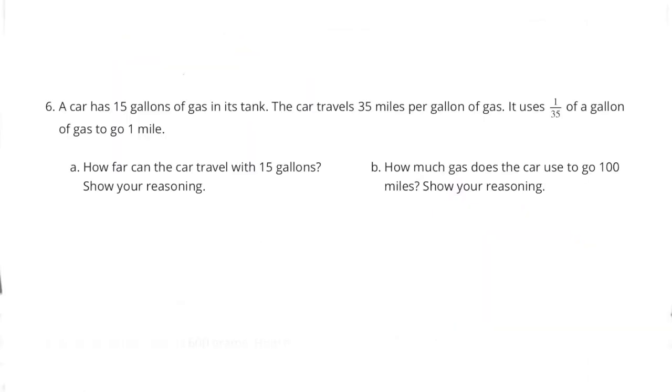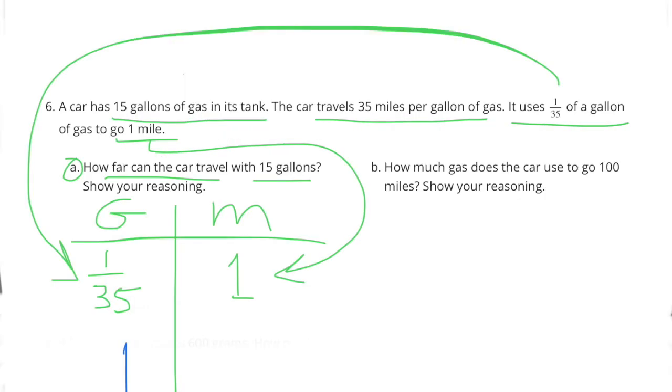Number 6. A car has 15 gallons of gas in its tank. The car travels 35 miles per gallon of gas. It uses 1/35th of a gallon of gas to go 1 mile. Part A: How far can the car travel with 15 gallons? Show your reasoning.